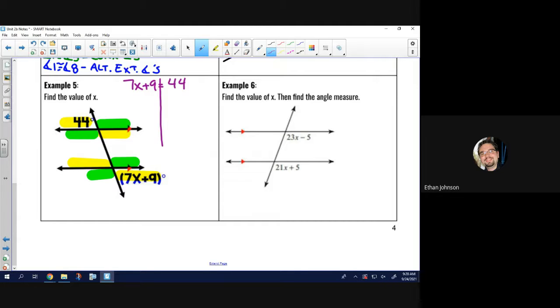To solve, I'll subtract 9 from both sides. So, 7x equals 35. Divide by 7. And then, x equals 5.